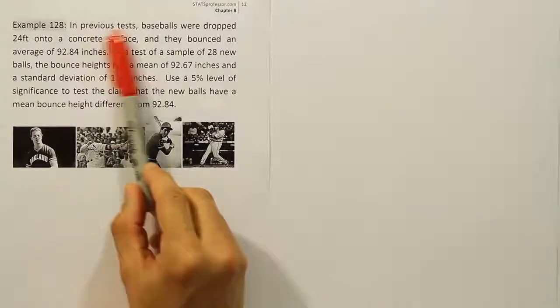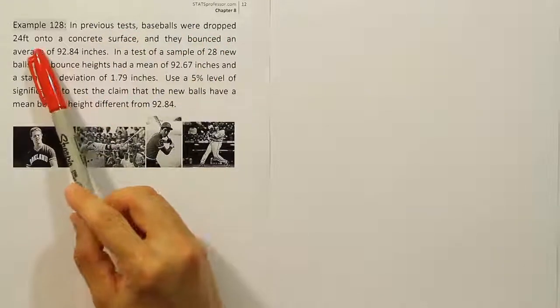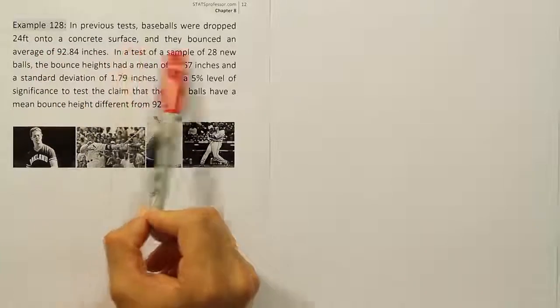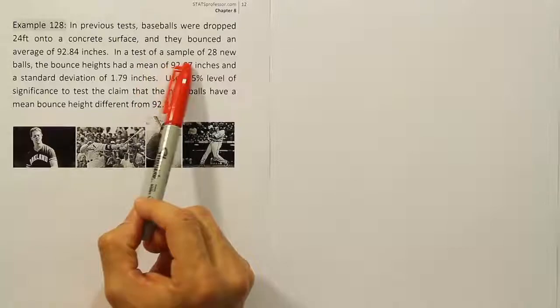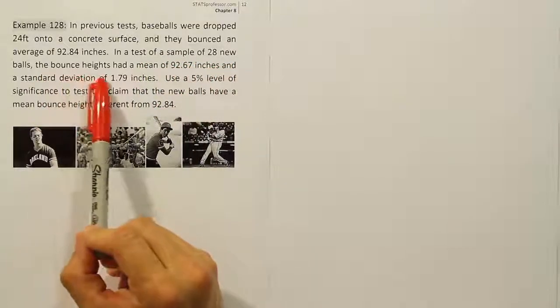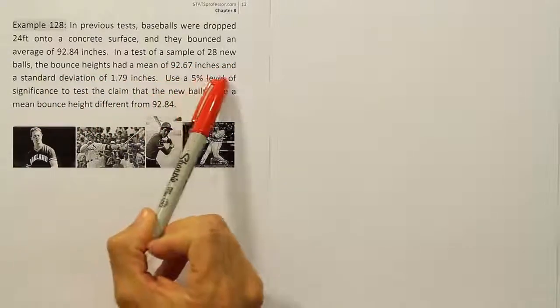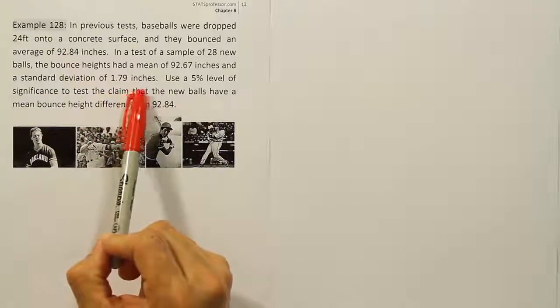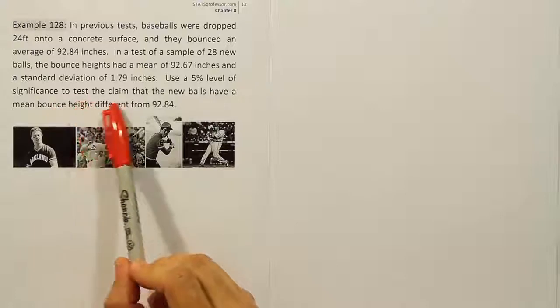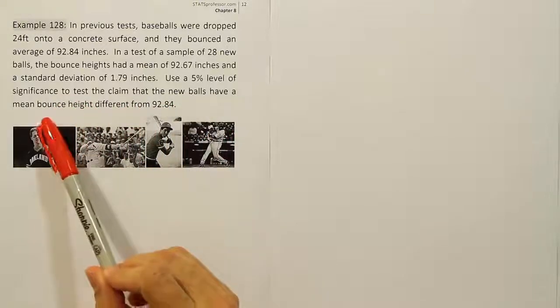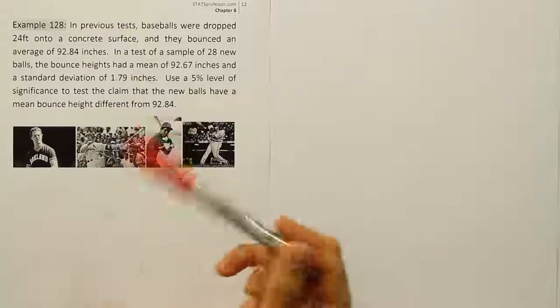Example 128. In previous tests, baseballs were dropped 24 feet onto a concrete surface, and they bounced an average of 92.84 inches. In a test of a sample of 28 new balls, the bounce heights had a mean of 92.67 inches and a standard deviation of 1.79 inches. Use a 5% level of significance to test the claim that the new balls have a mean bounce height different from 92.84.